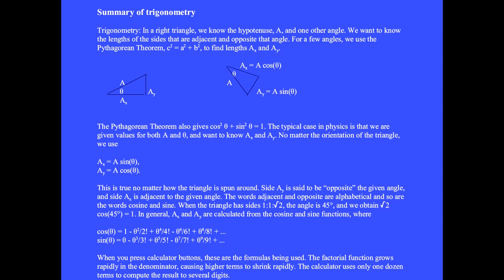When you press calculator buttons these are the formulas being used. The factorial function grows rapidly in the denominator causing higher terms to shrink rapidly. The calculator uses only one dozen terms to compute the result to several digits.